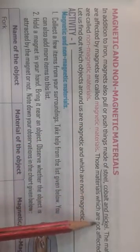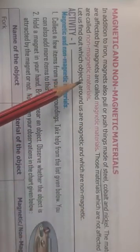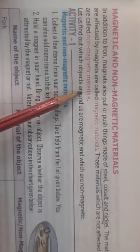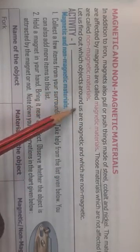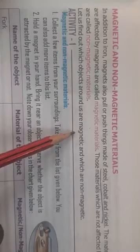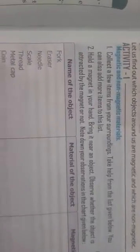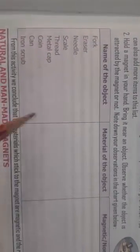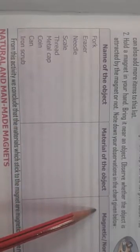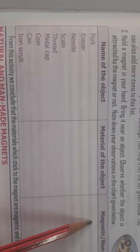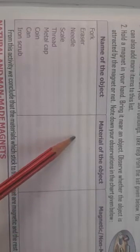The materials which are not attracted by magnets are called non-magnetic materials. Let's find out some objects around us which are magnetic and non-magnetic. For example, a fork — is it magnetic or non-magnetic? It is non-magnetic. Eraser is non-magnetic.